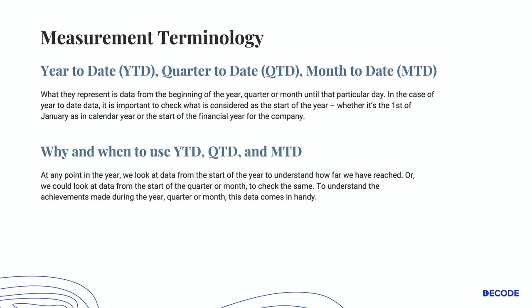The first terms I'll be talking about are YTD, QTD, MTD — or year to date, quarter to date, month to date. What they represent is data from the beginning of the year, or the beginning of the quarter, or the beginning of the month until that particular day. In the case of year to date data, it is important to check what is considered as the start of the year — whether it's the 1st of January, which is usually the case as in calendar year, or the start of the financial year, which could be a different date. These terms are used to understand achievements made during the year, quarter, or month.